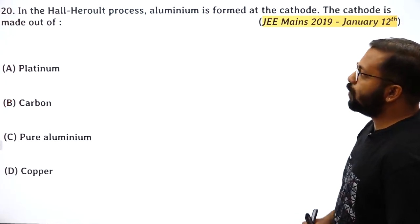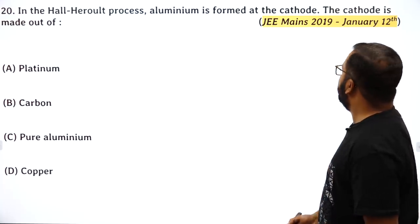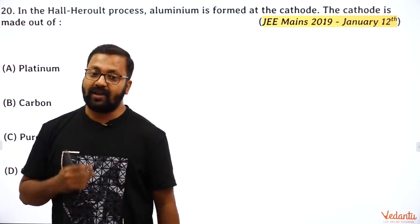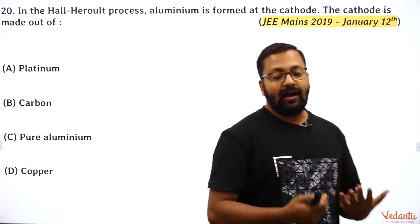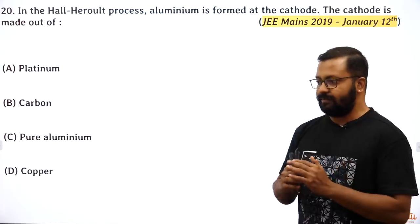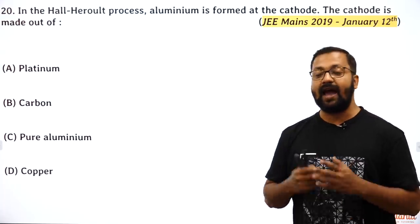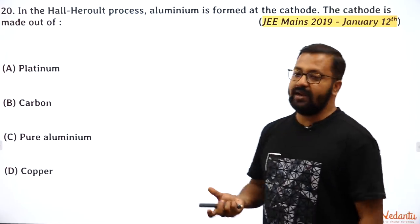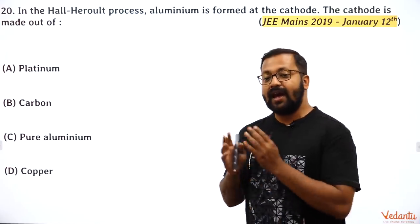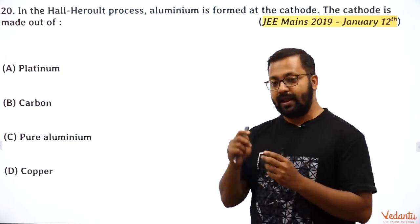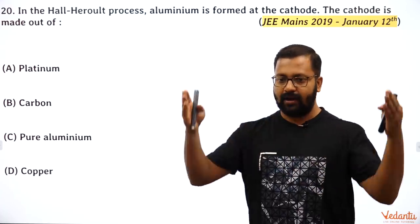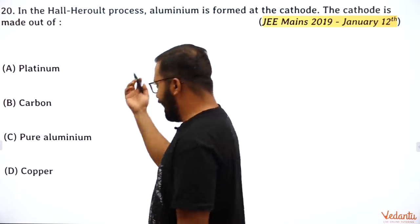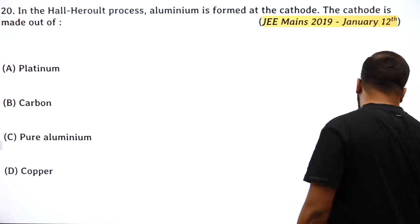In the Hall–Héroult process, aluminium is formed at the cathode. Aluminium is a highly reactive/active metal, so reduction of its oxide requires electrolytic reduction using graphite electrodes in a tub. The cathode is made out of carbon — that is the answer.